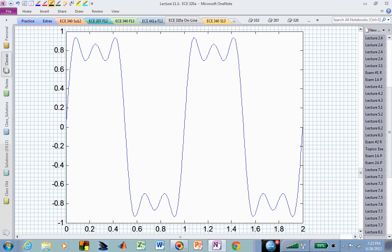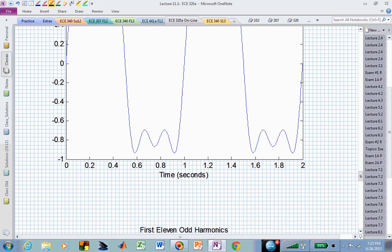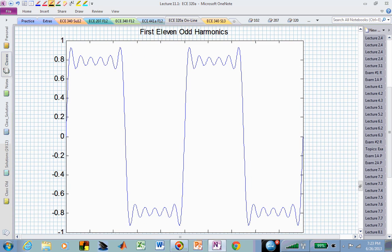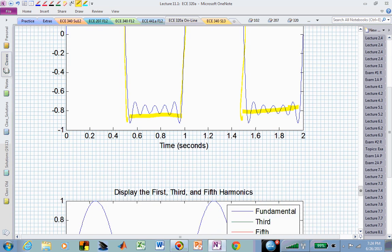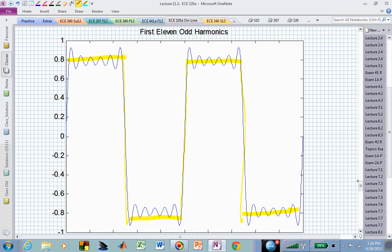Then we're starting to get something that's getting a little bit sharper in terms of its transitions between the high value and the low value. Finally, if we sum the first 11 harmonics, this is looking very much like a square wave. And in the limit, as we include more and more of these harmonics, we are going to become more and more approximating of that square wave behavior.